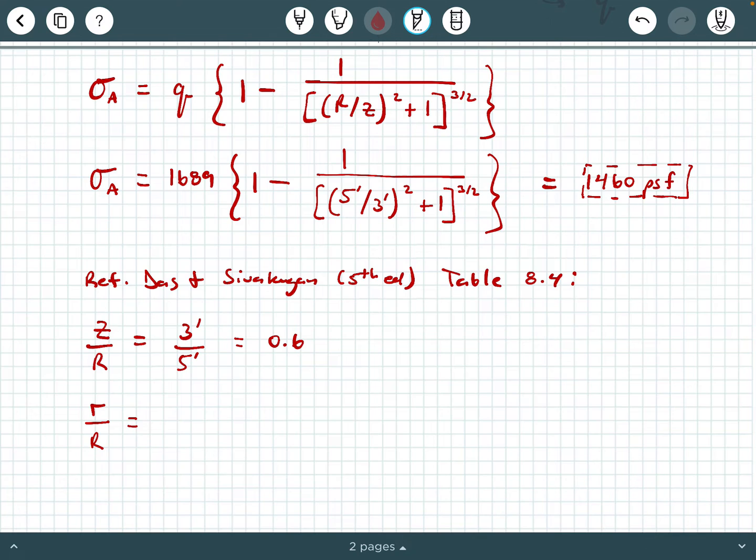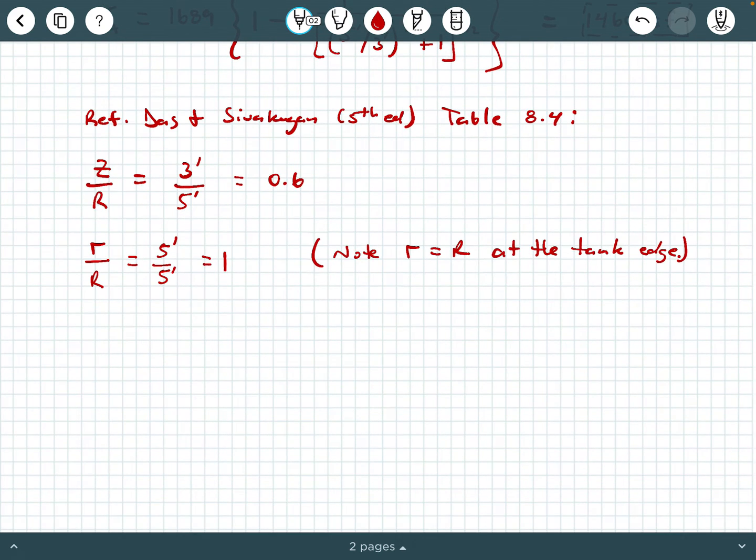And we're also going to enter the table across the top with our little radius over our capital radius. The little r value is the radial distance you are interested in. If we're interested at the edge of the tank, that means the little radius we're interested in is the same as the capital radius, so that's just five feet over five feet equals one. Note that r equals R at the tank edge.